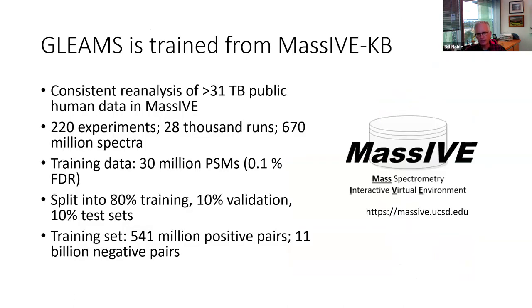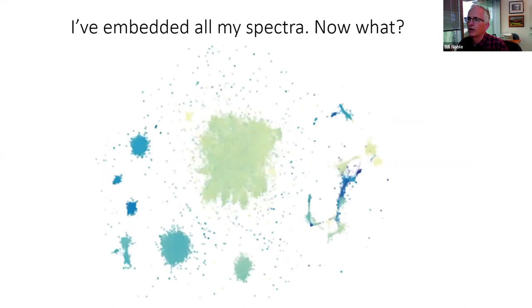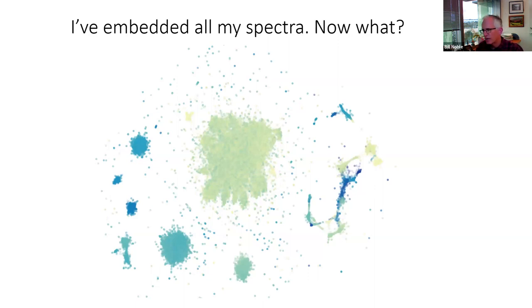The training set comprised 31 terabytes of public data from MassIVE, from which we obtained 30 million peptide-spectrum matches at a 0.1% false discovery rate. We trained on positive and negative pairs drawn from within that collection.